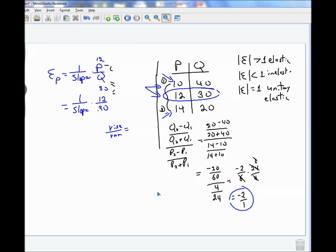So the rise from 10 up to 12 is 2. That's the rise, because P is on the vertical axis. And the run would be from 40 down to 30, which would be minus 10, because it went down by 10. So the slope is 2 over minus 10, or 1 over minus 5. So that's the slope.